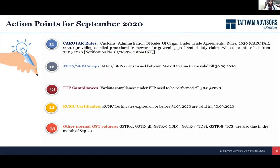Then there are MEI scripts, FTP compliances, RCMC certificates, and other returns — anything falling in the month of September. Please ensure you are doing their renewals. For example, if you have scripts expiring on 30th September, please use and utilize them for payment of your duties — otherwise you'll get nothing out of them. Any FTP compliances or advanced authorizations expiring should be renewed. If RCMC is expiring, get them renewed. For normal returns, whatever the due date is, please follow those due dates.